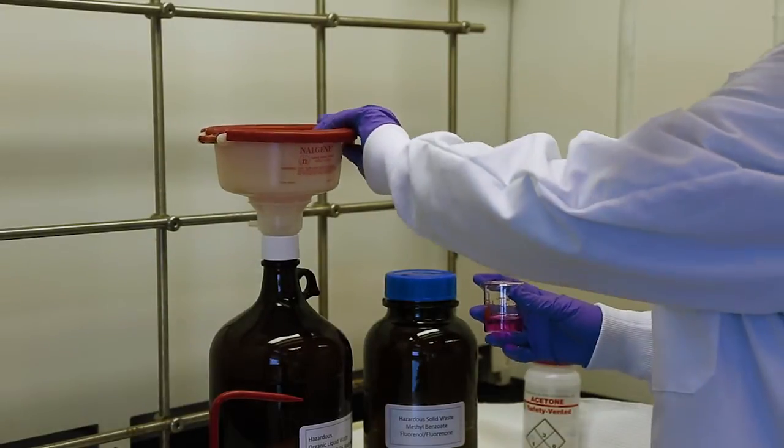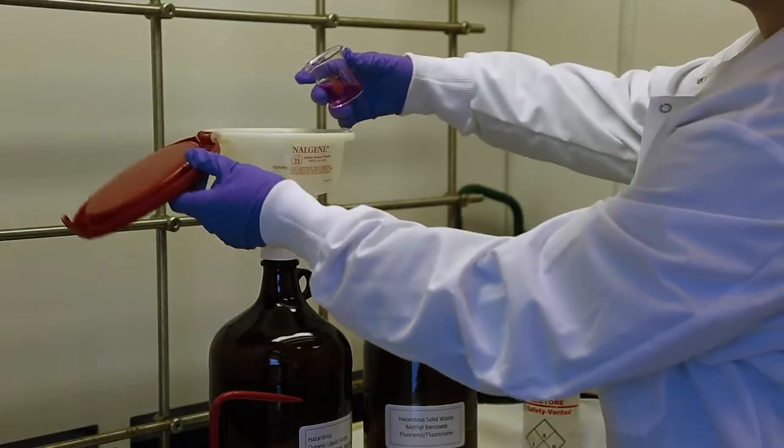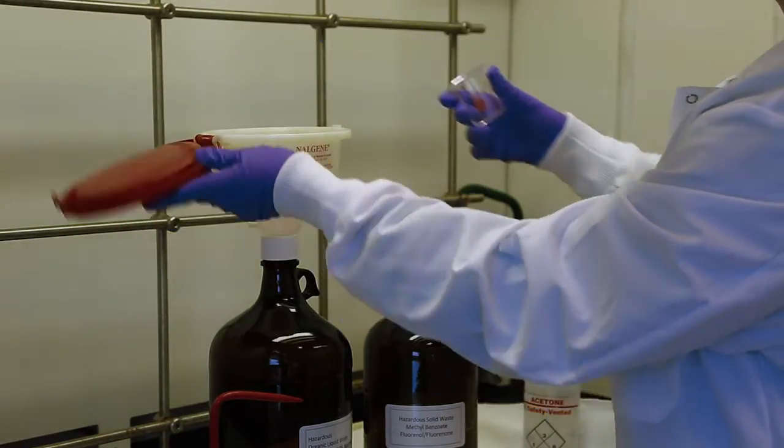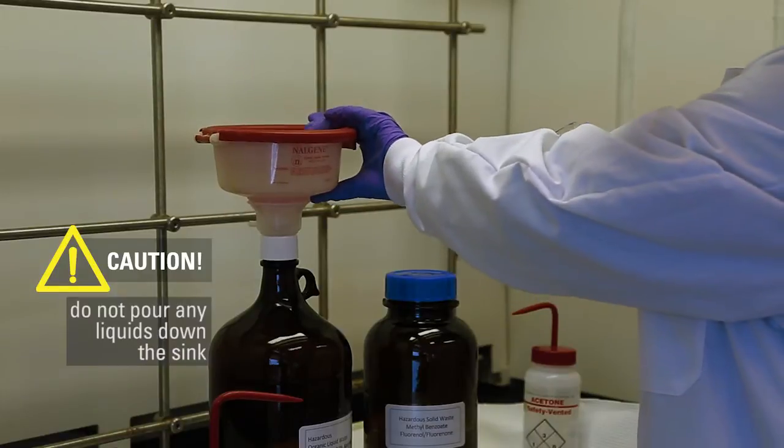Use the attached funnel to pour all liquids into the bottle. Close the top of the funnel after every addition of waste. Do not pour any liquids down the sink.